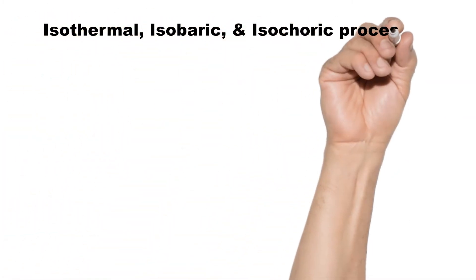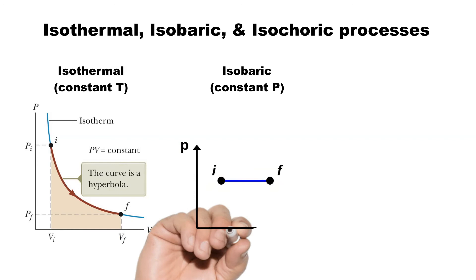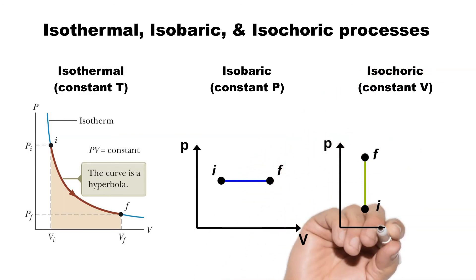The prefix ISO is often used to designate a process for which a particular property remains constant. An isothermal process, for example, is a process during which the temperature remains constant. An isobaric process is a process during which the pressure remains constant. An isochoric or isometric process is a process during which the specific volume remains constant.